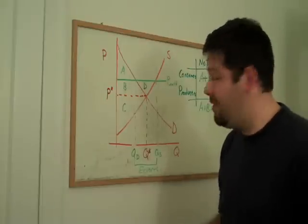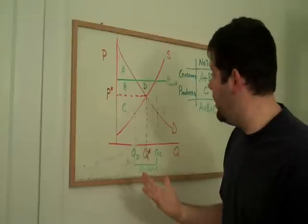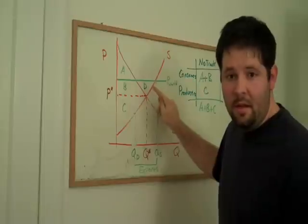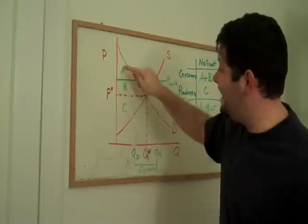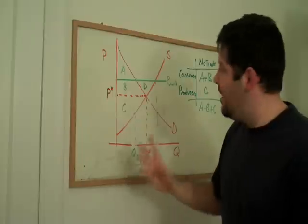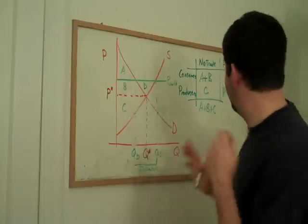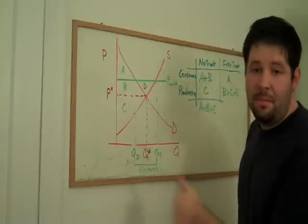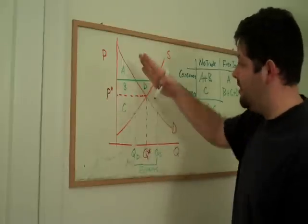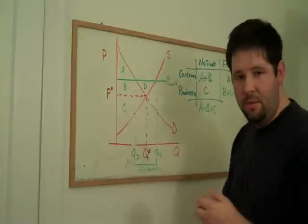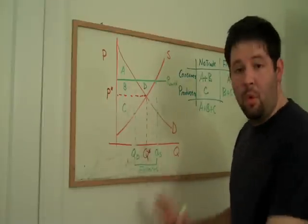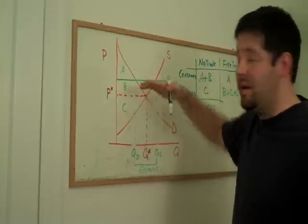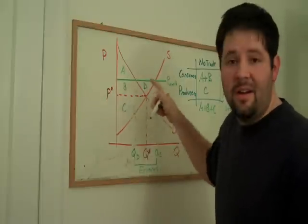The problem is symmetric to the world price being below the domestic price. With the world price above, the producers now get B plus C plus D, and consumers no longer get A plus B but only A. So consumers lose and producers gain. But the producers' gain of B plus D is greater than the consumers' loss of just B. In total, consumers and producers taken together have more surplus — this is another example where the more efficient policy is to open the market up to trade, more efficient by area D.